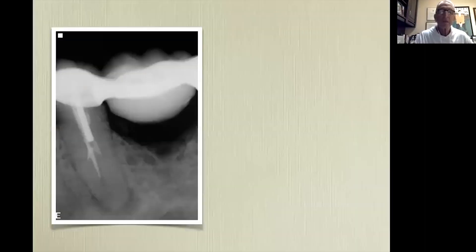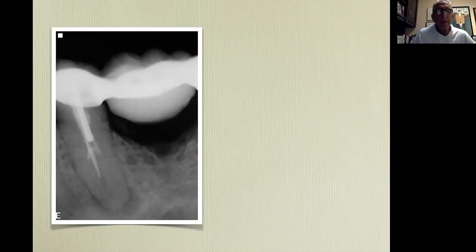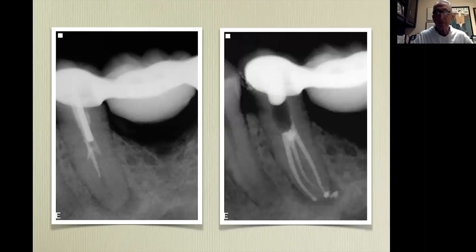Just to show another case — this tooth has a post in it and the root canal therapy is obviously poor. That tooth might have been scheduled for extraction, but again, we don't have to remove the prosthesis. We remove the post, retreat the tooth, and we get a great result — with the aid of a surgical operating microscope and ultrasonics.